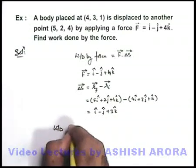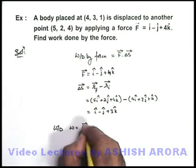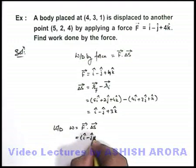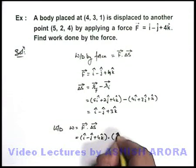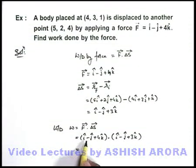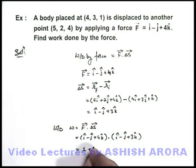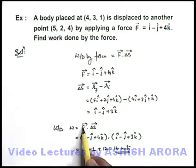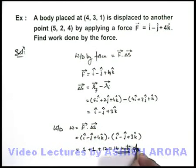Work done = F·Δs = (î − ĵ + 4k̂)·(î − ĵ + 3k̂). Computing: î·î = 1, (−ĵ)·(−ĵ) = 1, and 4k̂·3k̂ = 12, so the total is 1 + 1 + 12 = 14. The work done is 14 joules if force is in newtons and displacement is in meters.